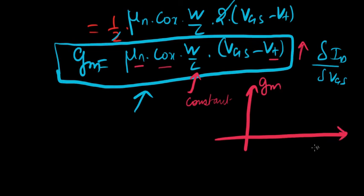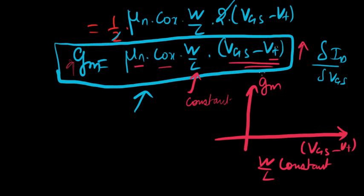With respect to VGS minus VT with W over L constant. I repeat mu N and C ox are going to be considered constant so what do you see from this equation? When VGS goes up GM goes up when it goes down GM goes down and it's a linear relationship there's no square or cubic term there. That means with VGS, GM is going to increase in a straight line.